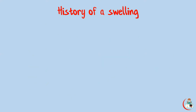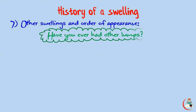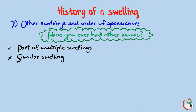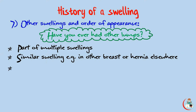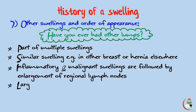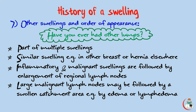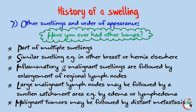The next item is other swellings and order of appearance. Ask the patient: have you ever had other lumps, whether nearby or elsewhere? This may represent one swelling among multiple ones, or there may be a similar swelling — for example, a lump in the other breast as in lobular carcinoma, or hernia elsewhere due to a mesodermal defect. Note that inflammatory and malignant swellings are followed by enlargement of the regional lymph nodes. Large malignant lymph nodes may cause swelling of the catchment area by edema (venous obstruction) or lymphedema (lymphatic obstruction). Malignant tumors may be followed by the appearance of distant metastases in bones, liver, lungs, etc.